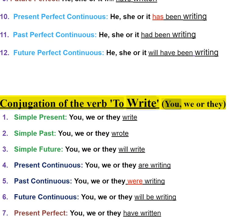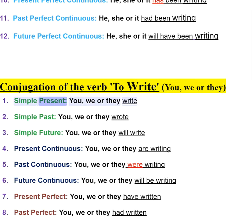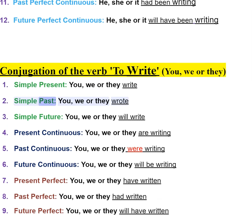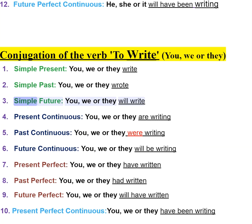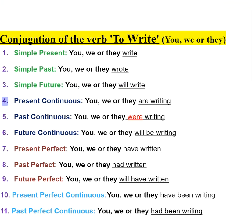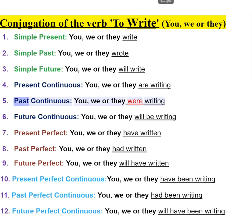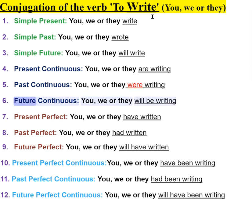Conjugation of the verb to write. You, we, or they. One: simple present — you, we, or they write. Two: simple past — you, we, or they wrote. Three: simple future — you, we, or they will write. Four: present continuous — you, we, or they are writing. Five: past continuous — you, we, or they were writing. Six: future continuous — you, we, or they will be writing.